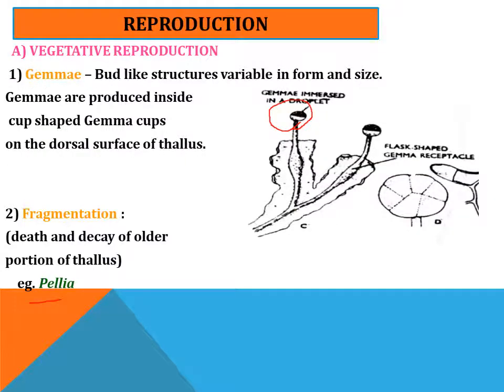Regarding reproduction, they reproduce vegetatively by the formation of gemmae — bud-like structures which are variable in form and size. The gemmae are produced inside cup-shaped gemma cups on the dorsal surface of the thallus. The second type of vegetative reproduction is fragmentation, that is, death and decay of the older portion of the thallus, which is common in Pellia.